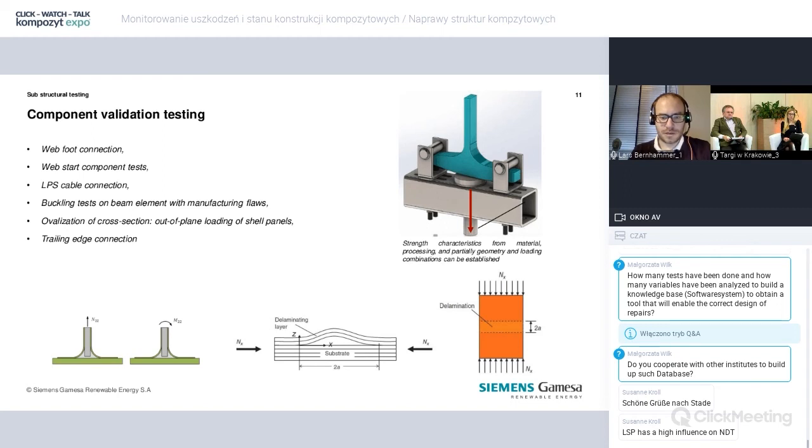Once we have completed those material level evaluations, we move one step up and start to evaluate on a component level. These component level tests, I just display the web-foot tests that we quite often do. They're normally custom designed to the application. So typically we want to investigate a specific feature of our blade design and set design limits for our full scale blades. And that can either be a nominal design value or that can also be acceptance criteria for smaller delaminations, dry spots, repairs that we carry out, wrinkle criterions, you name it. Anything in principle that can go slightly wrong in the production of composite materials on a large scale.